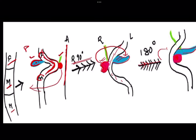So finally, the dorsal pancreatic duct, ventral pancreatic duct, and primitive bile duct are positioned together. The dorsal pancreatic duct forms the majority of the pancreas: the tail, body, anterior part of the head, and neck. The ventral bud forms the uncinate process and the posterior part of the head of the pancreas.